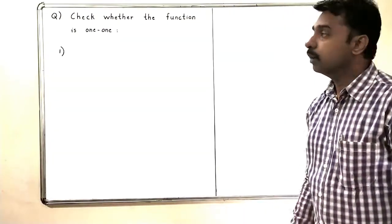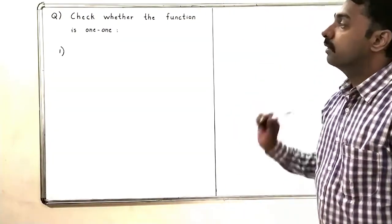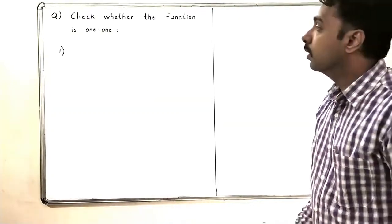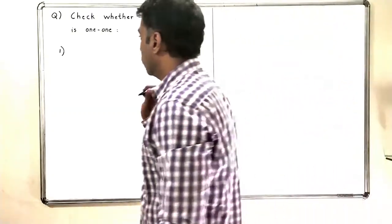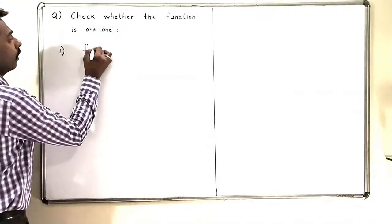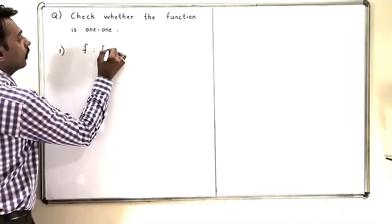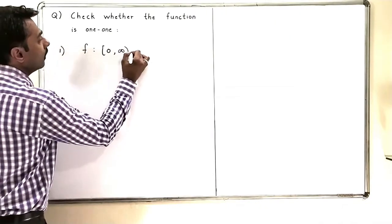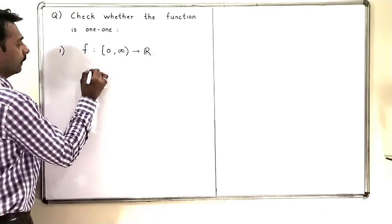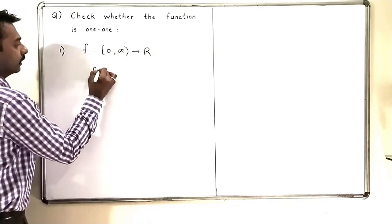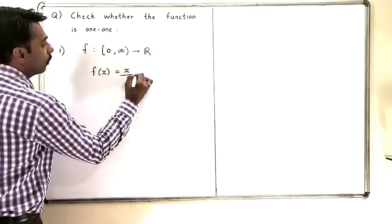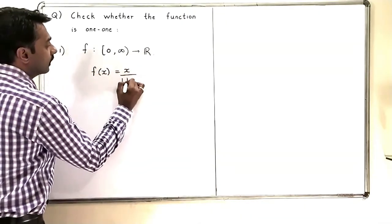In this video, we are going to check functions whether they are one-to-one or not. Let me take the first example. I am taking f from [0, infinity) to ℝ, and I am going to define it by f(x) = x / (1 + x).